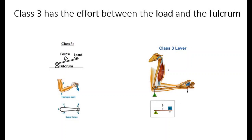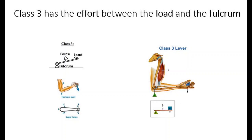Here we have the example. Class III — the elbow is considered the fulcrum, and you have the effort by the biceps and the load in your hand.